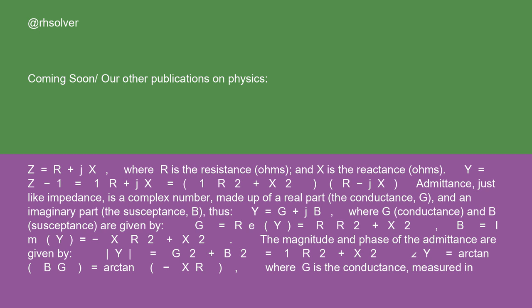Where G (conductance) and B (susceptance) are given by G = R/(R² + X²) and B = -X/(R² + X²).